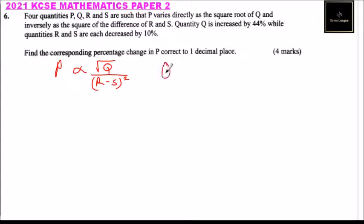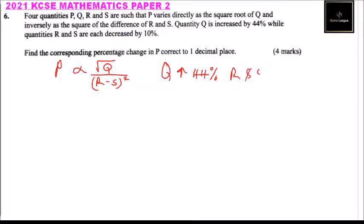So Q is increased by 44%, and not Q but R and S are decreased by 10%. So we need to find: if these changes are effected, what will be the increase of P.